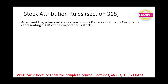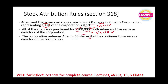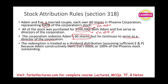Example: Adam and Eve, a married couple, each owned 60 shares of Phoenix Corporation — together, 100% of the company. All stock was purchased for $100,000 — $50,000 by Adam, $50,000 by Eve. Both Adam and Eve serve as directors. The corporation redeems Adam's 60 shares, but he continues to serve on the board. This redemption is treated as a dividend distribution (assuming sufficient E&P) because Adam still constructively owns Eve's stock, which is 100% of Phoenix.